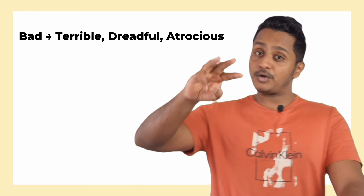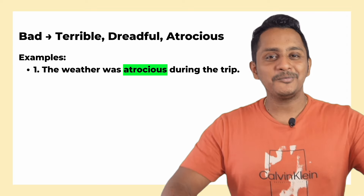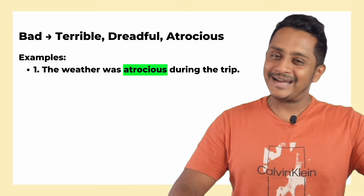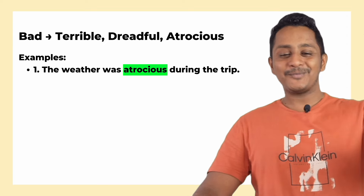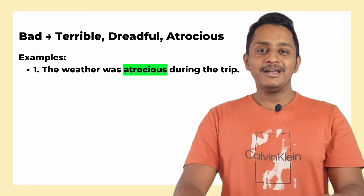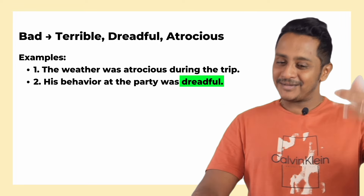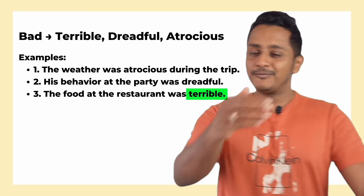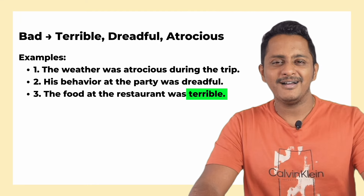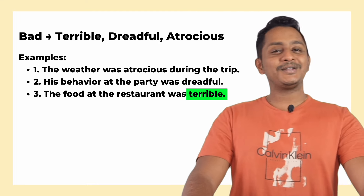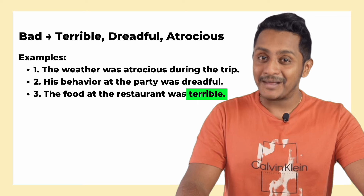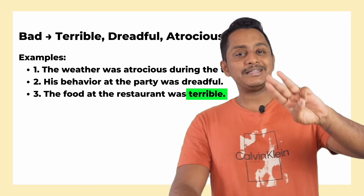The second word is 'bad,' the opposite of good. Instead of 'bad,' use terrible, dreadful, or atrocious. For example, instead of 'the weather was bad during the trip,' say 'the weather was atrocious during the trip.' Instead of 'his behavior at the party was bad,' say 'his behavior was dreadful.' Instead of 'the food at the restaurant was very bad,' say 'the food was terrible.'